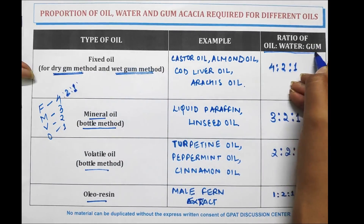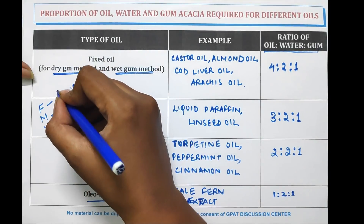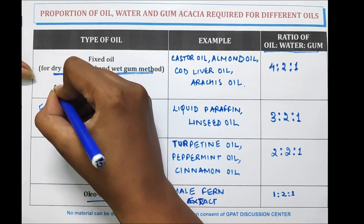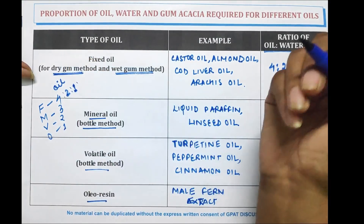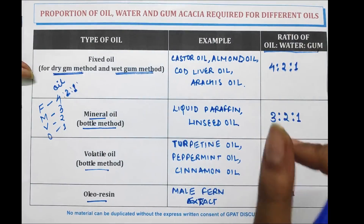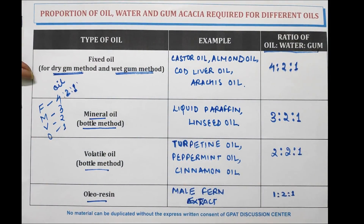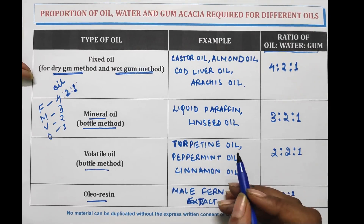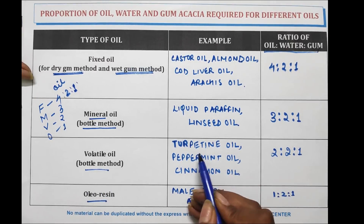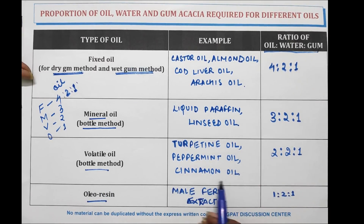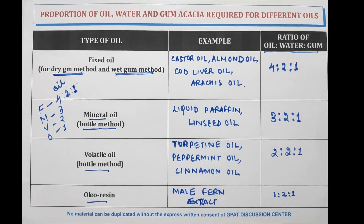You have to remember that 4, 3, 2, 1 is the ratio of oil, not of water or gum. Learn the examples: fixed oil includes castor oil, almond oil, cod liver oil, and arachis oil; mineral oil includes liquid paraffin and linseed oil; volatile oil includes turpentine oil, peppermint oil, and cinnamon oil; and oleurizing is male fern extract. Thank you for watching this video.